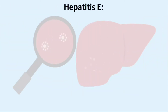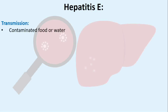Hepatitis E Transmission: Hepatitis E is mainly transmitted through eating food or drinking water that has been contaminated by the feces of an infected person. It can also be spread by eating raw shellfish that have come from water contaminated by sewage.